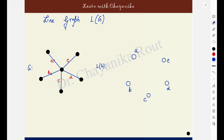Now, what about adjacency? Come to the first edge of the graph, that is edge A. This edge A is sharing its end points with which of the other edges of the graph. The edge A is not sharing one end point with anyone, but it is sharing the other end point with edges B, C, D and E. If an edge is sharing end points with other edges, those corresponding vertices have to be made adjacent. So A is sharing an end point with B, and A and B will be made adjacent.